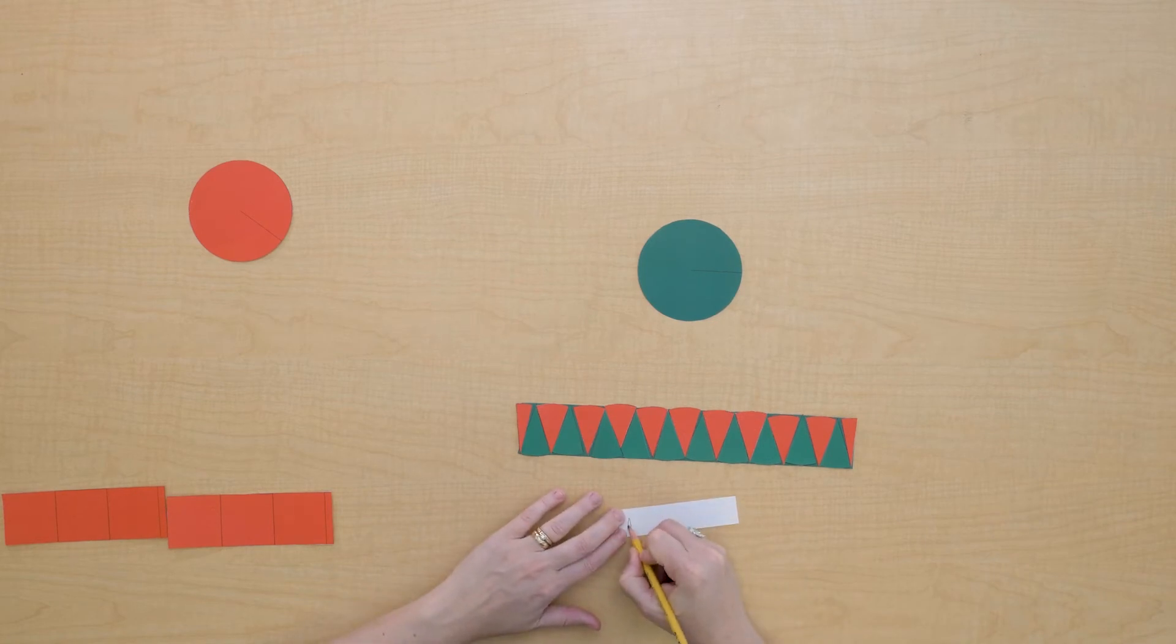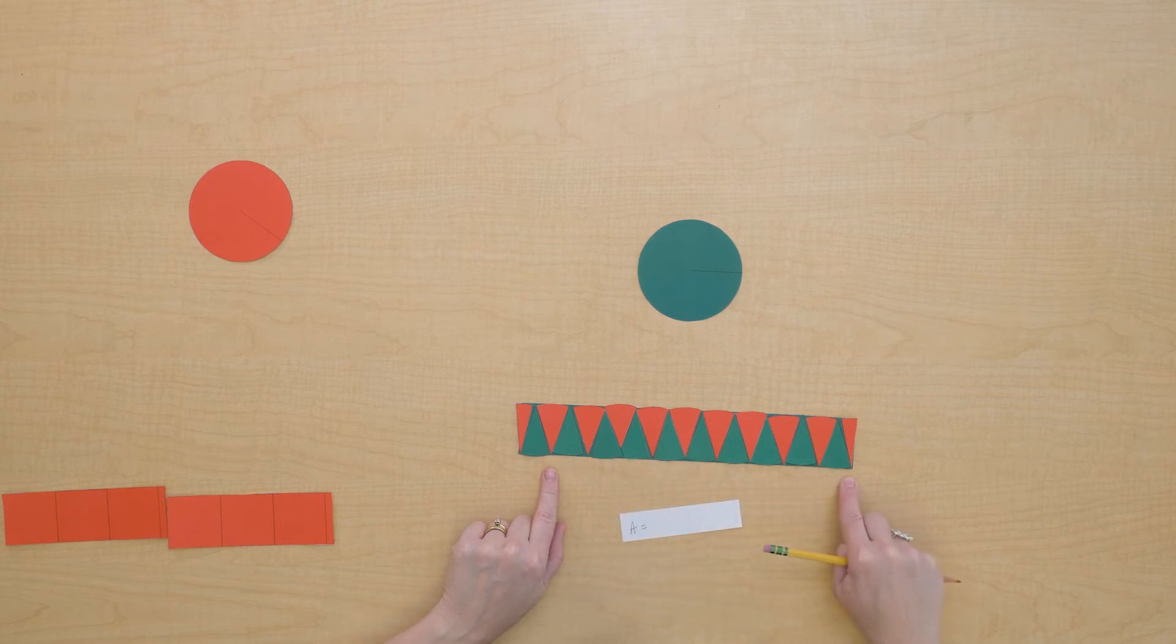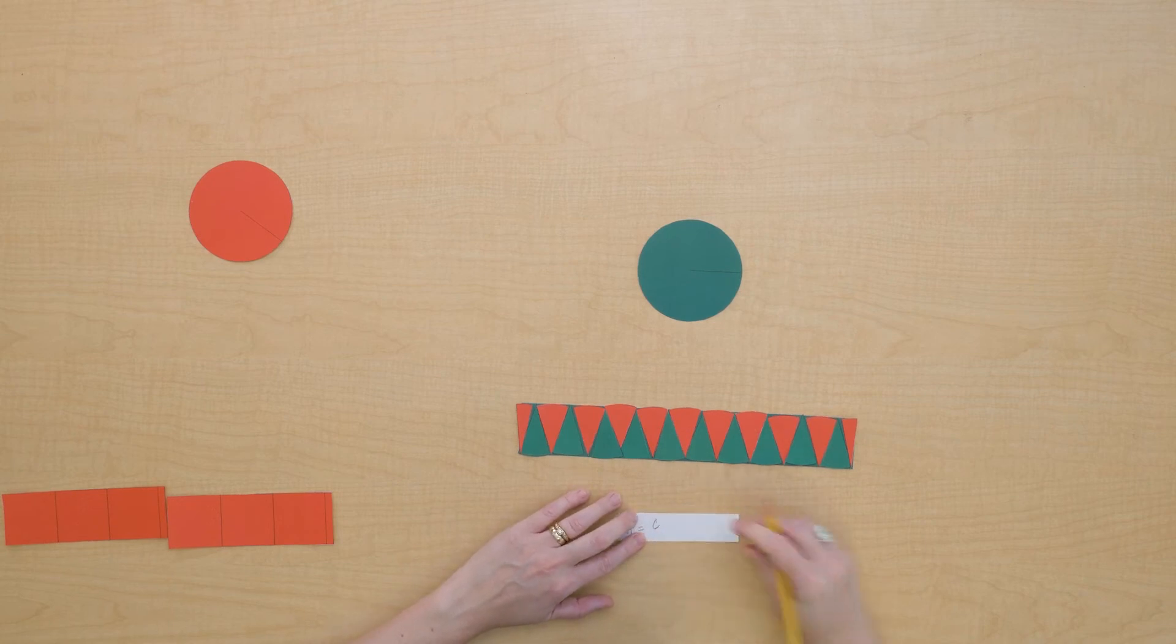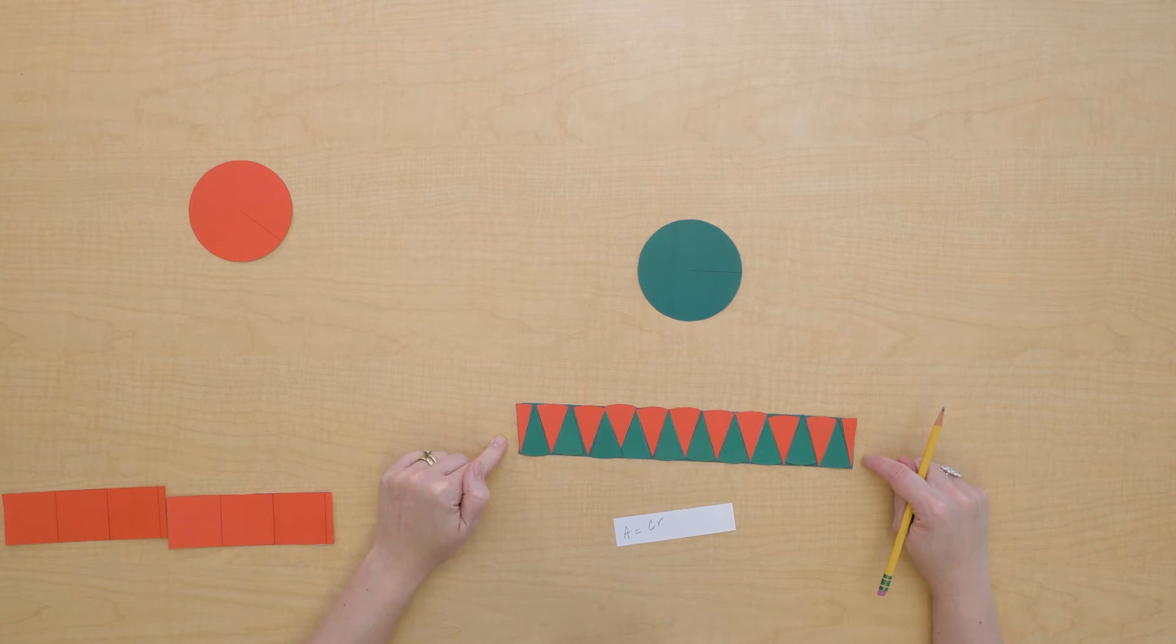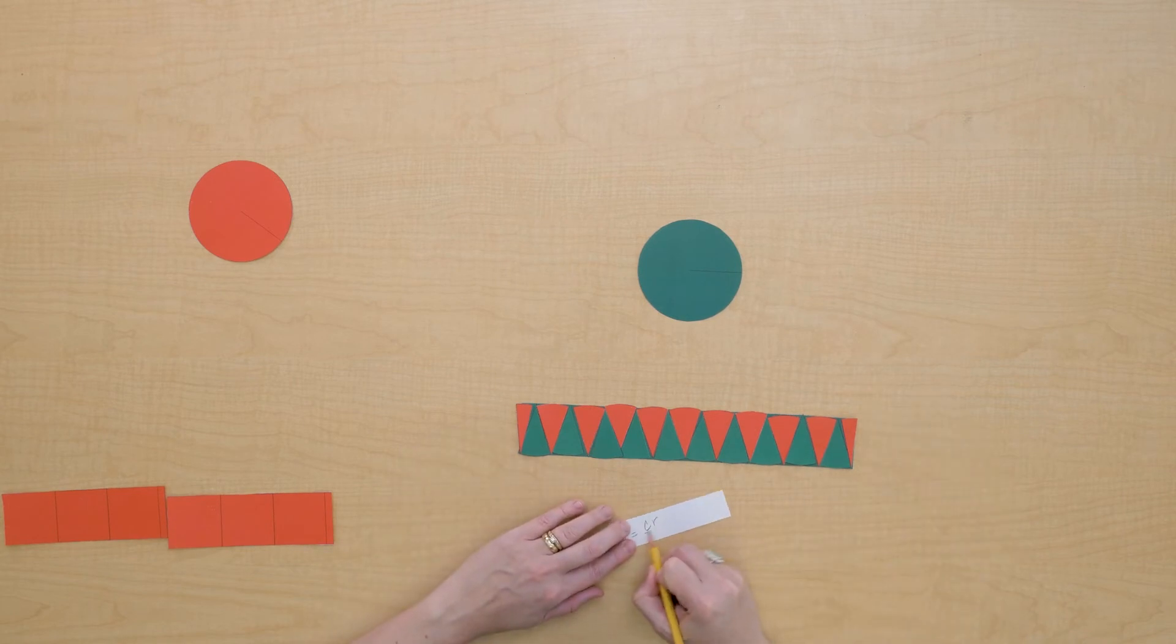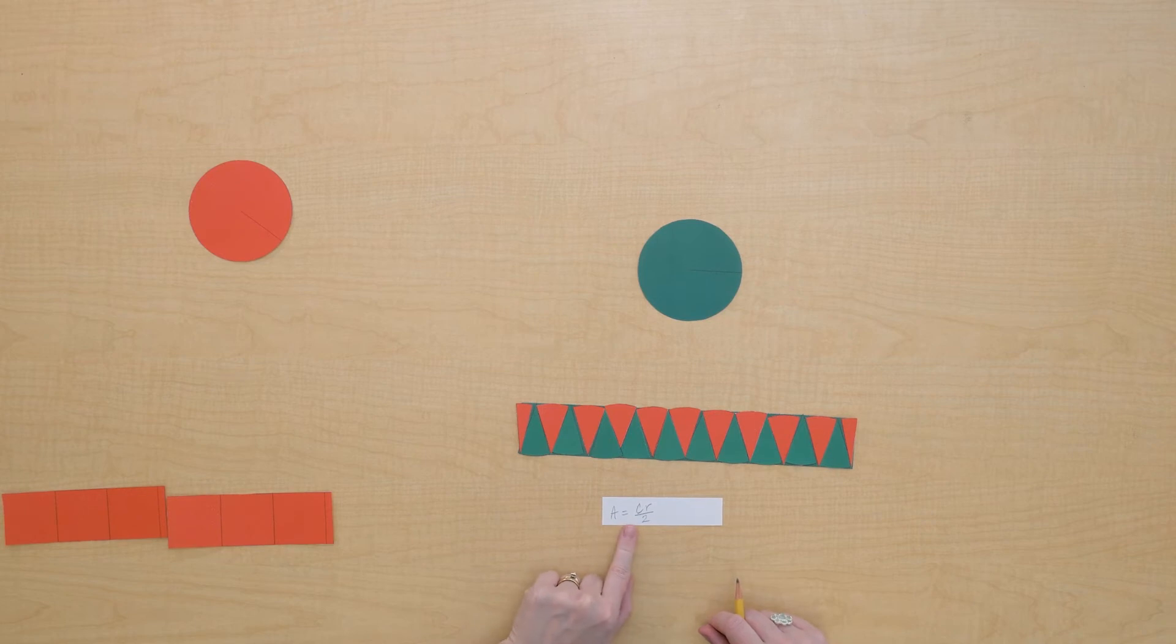The area of this circle is going to equal the circumference, which is the base of this rectangle, times the radius, which is the height of our rectangle. But this rectangle is made up of two circles, so we have to divide that all by two if we're finding the area of only one circle. So the area of this circle equals the circumference times the radius divided by two.